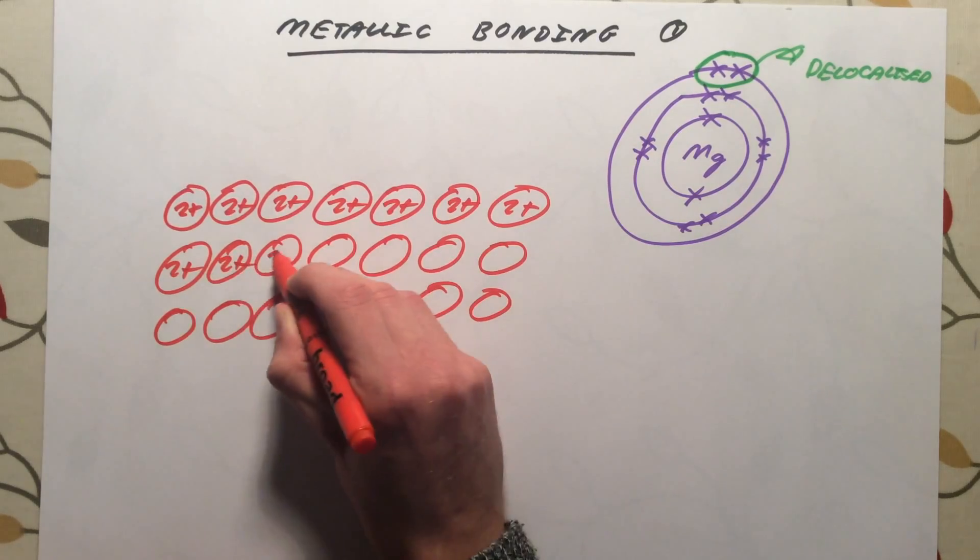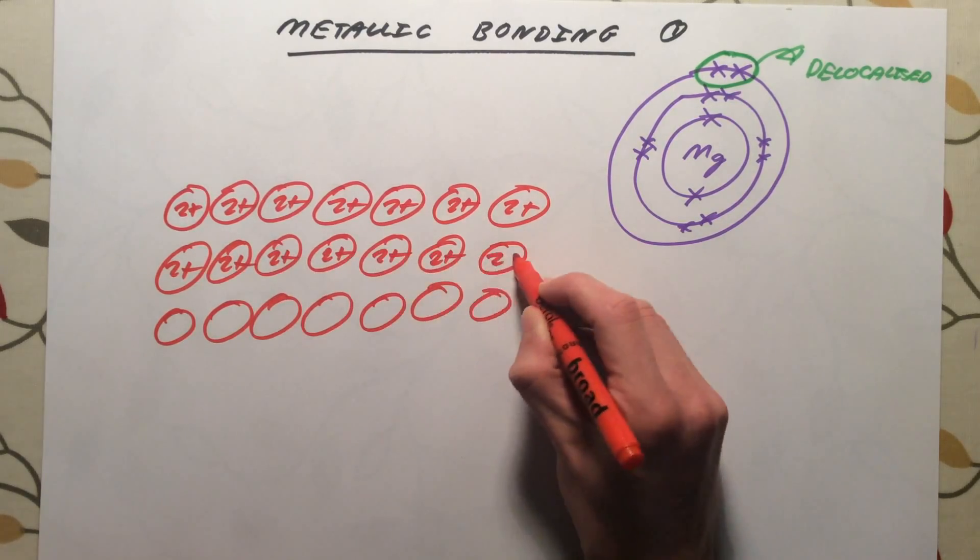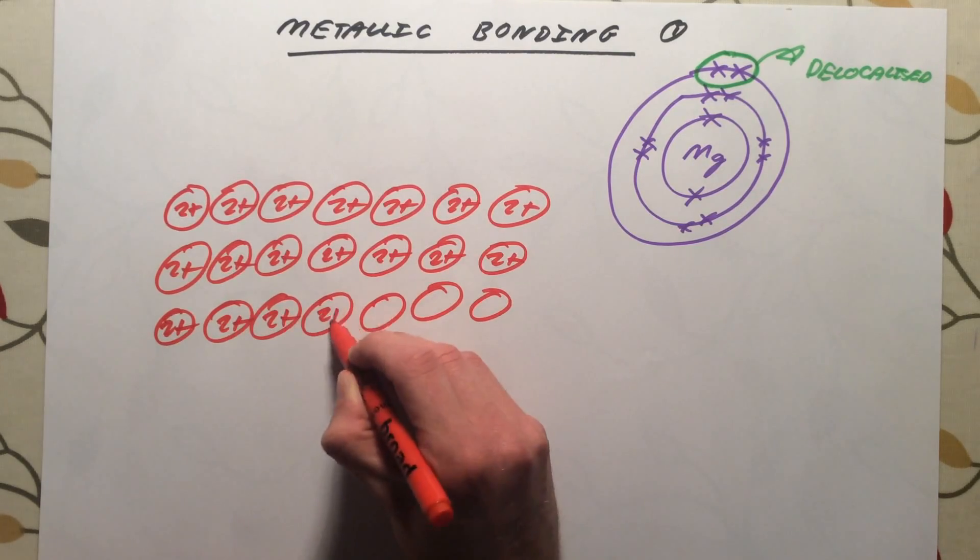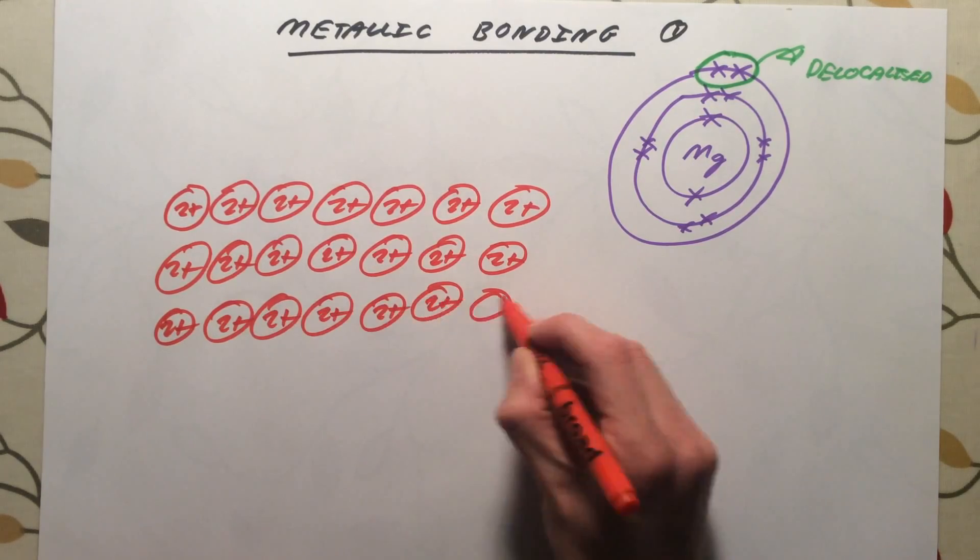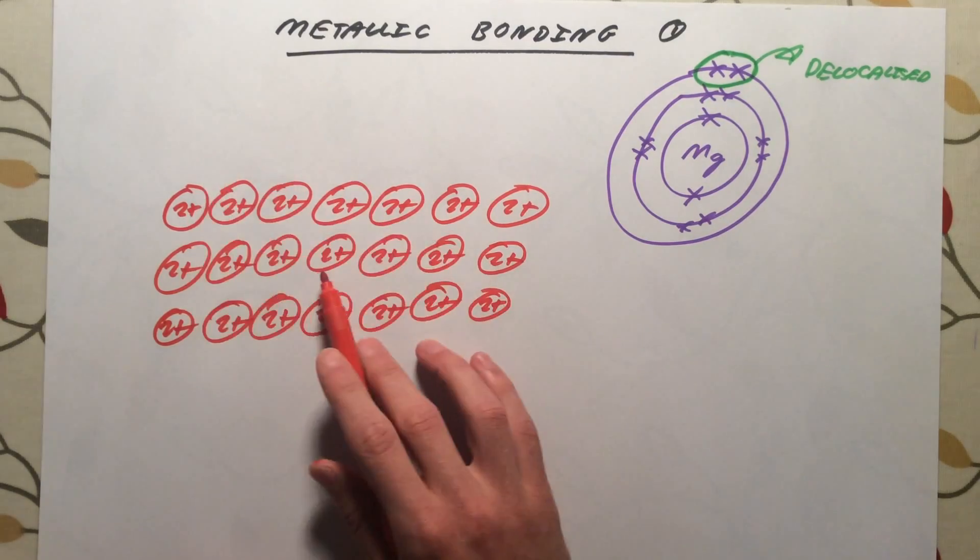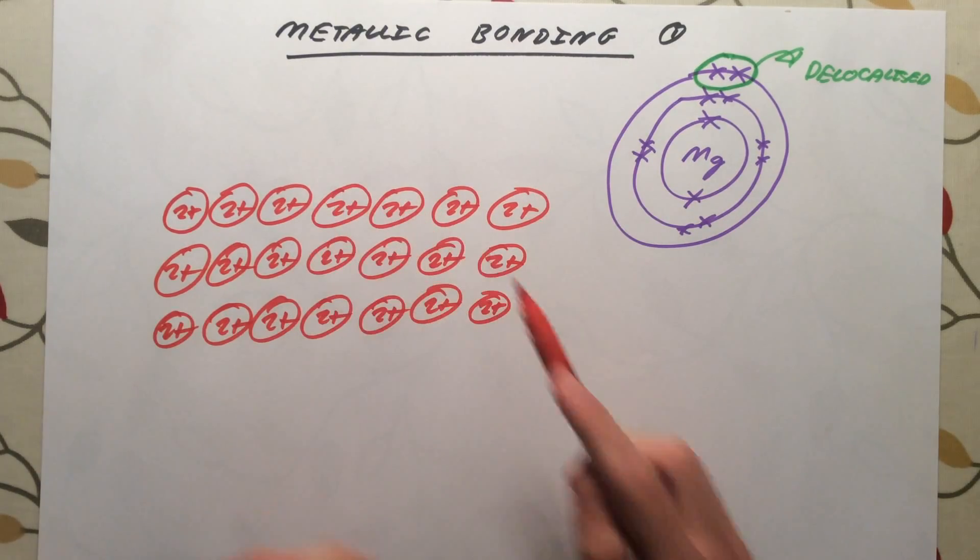Since they have all given out or caused two electrons to become delocalized, they are all going to have a charge of 2+. So where do those electrons go? Now, if you think about it, under normal circumstances, all these positive charges would simply repel each other. This would break apart. It would not be held together.